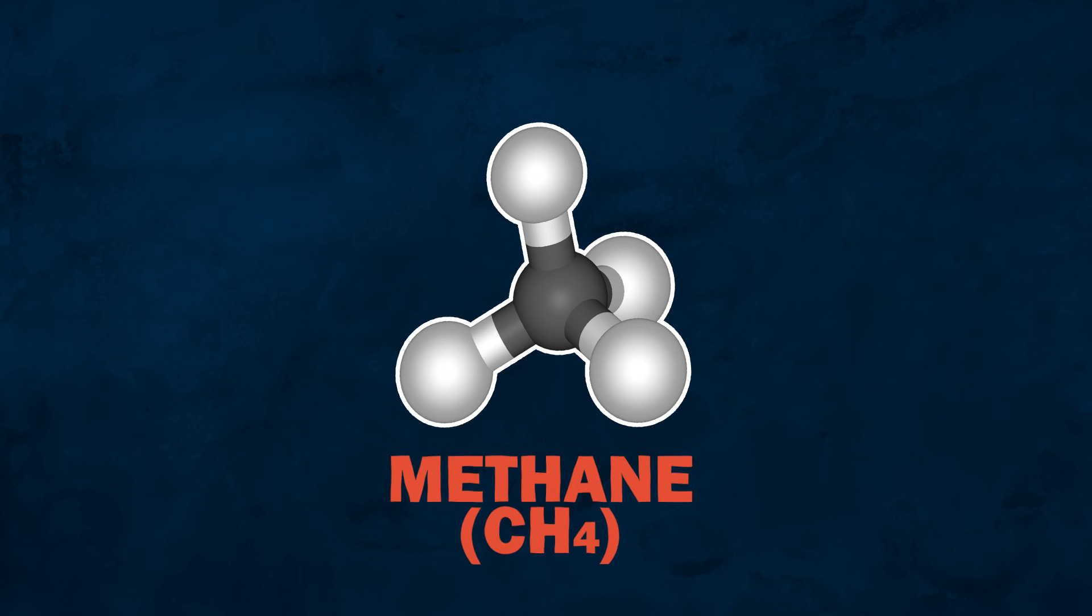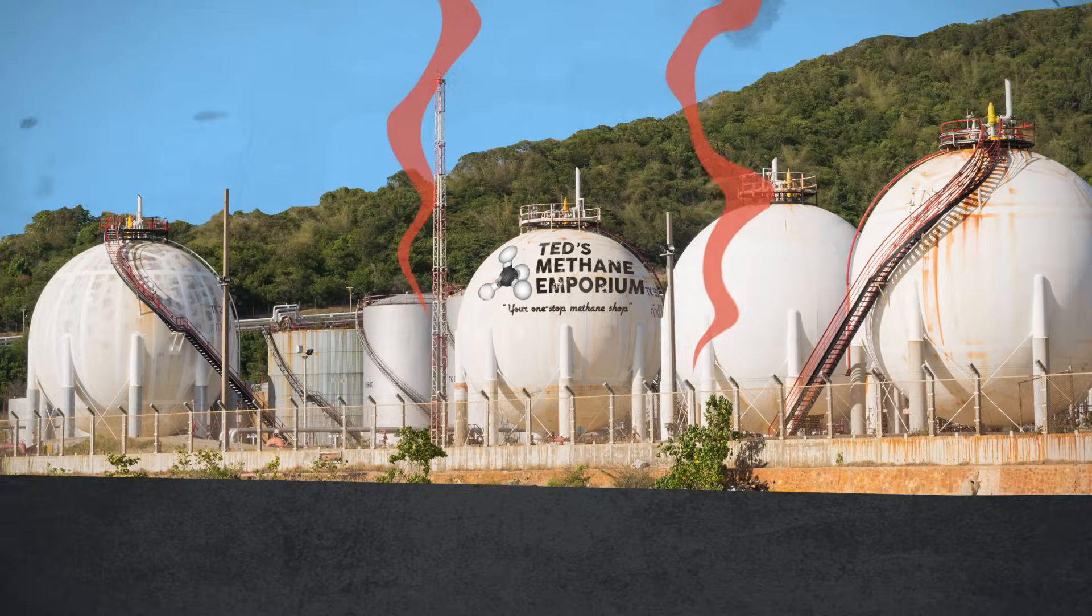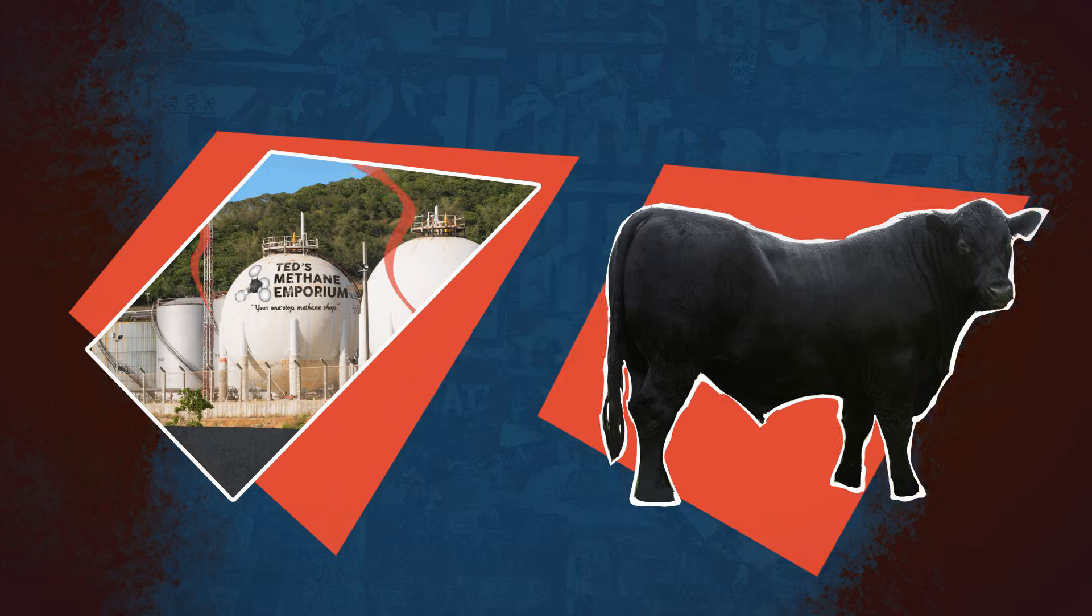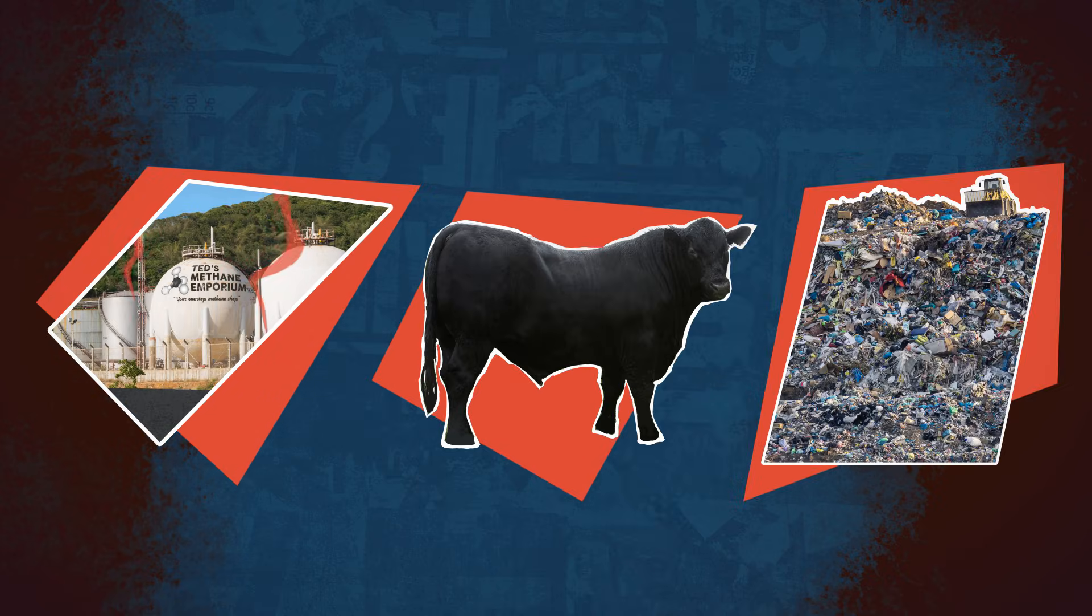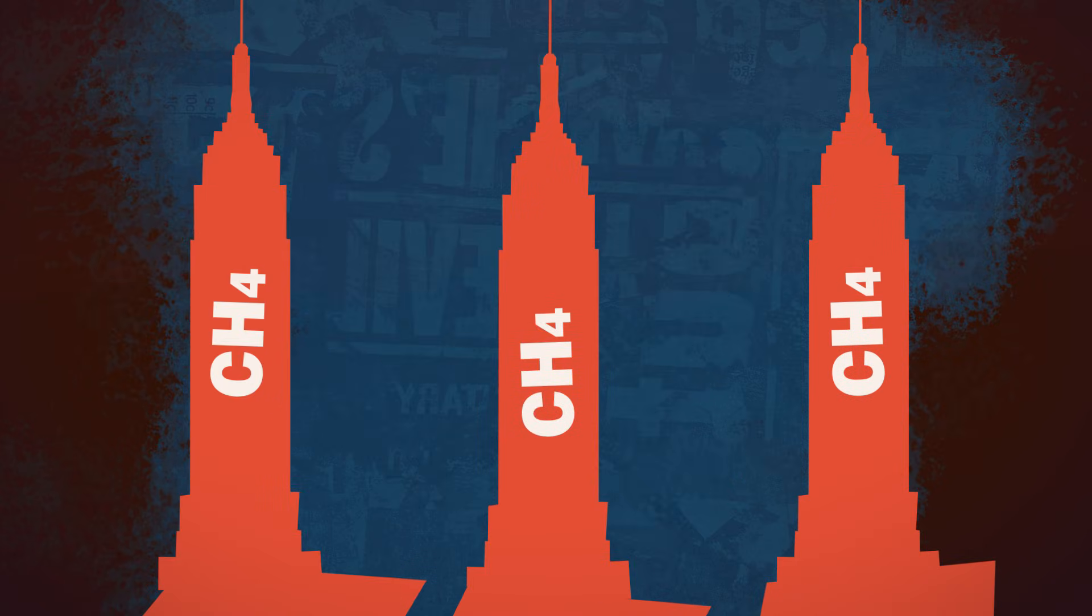But there's other greenhouse gases we're adding a lot more of, like methane, the key ingredient of natural gas. It leaks into the air when we extract and transport natural gas, but it's also produced by things like cows and landfills.